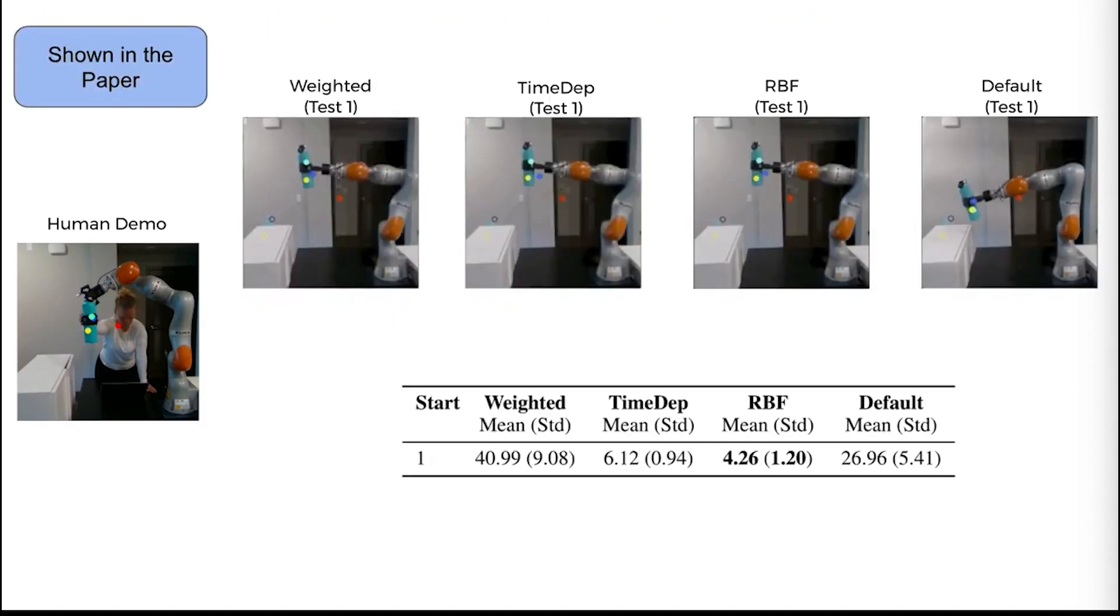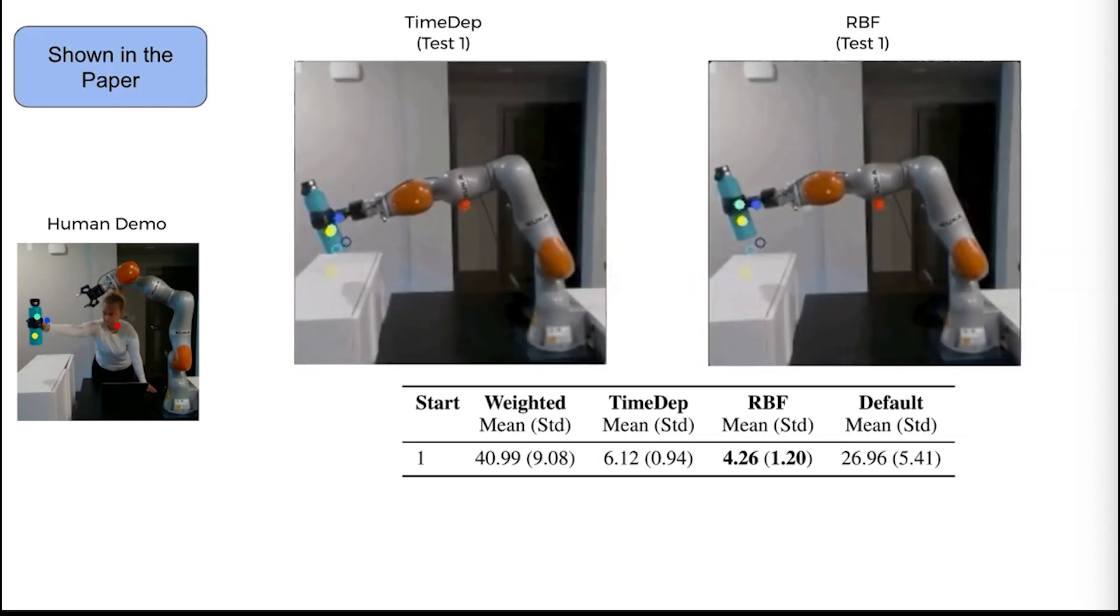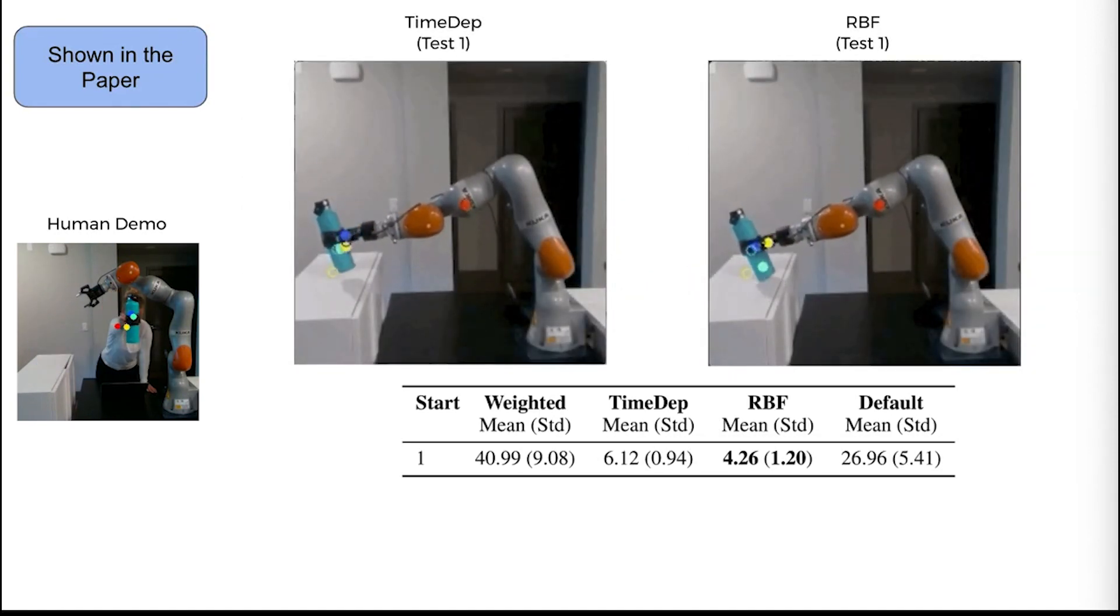The best performing cost parameterization for test case 1 is the RBF cost, with the time-dependent cost being a close contender.